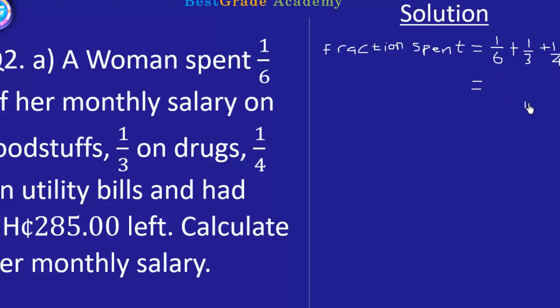Now let's simplify this. The LCM is 12, so 6 goes here 2 times, 1 times 2 is 2. 3 goes here 4 times, 1 times 4 is 4. Then 4 goes into 12 three times, 1 times 3 is 3.